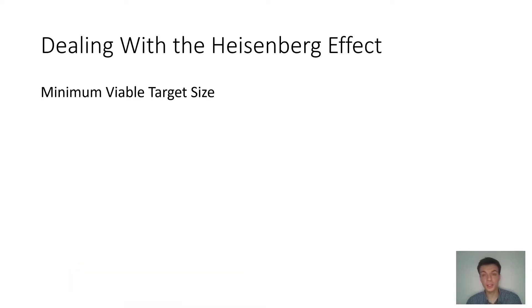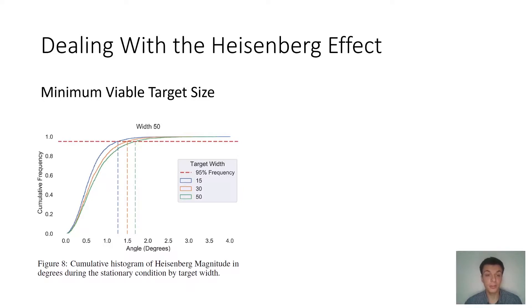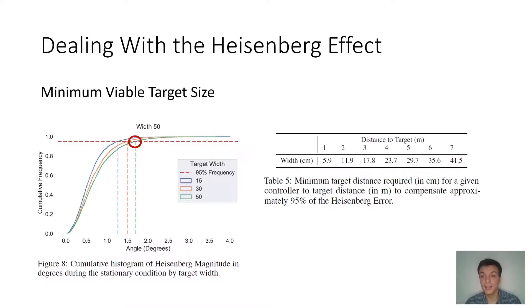Another compensation strategy could be to use larger target sizes, so use targets that are large enough to compensate for the Heisenberg magnitude. If we look at the cumulative histogram of our data, we can see that even for the largest targets that we used, 95% of the Heisenberg errors happened below a value of 1.7 degrees. So if we do use this value to calculate the targets that are necessary to be large enough to compensate for this magnitude, we can see that the targets have to be rather large. And this is for the ideal situation that the participant is pointing at the center without any hand jitter whatsoever. So the targets would need to be even larger, which is totally impractical for real life.